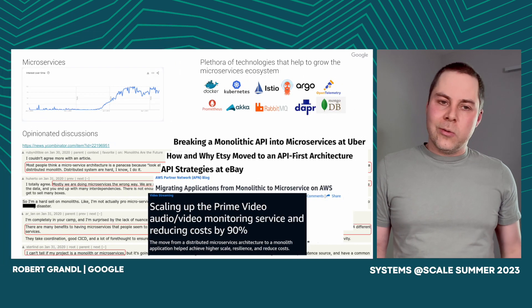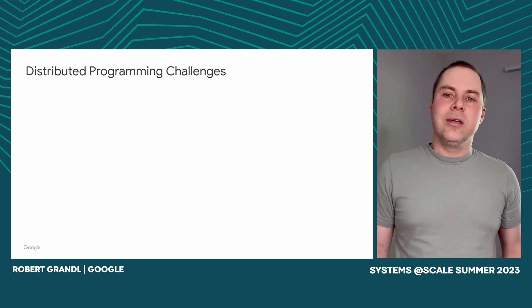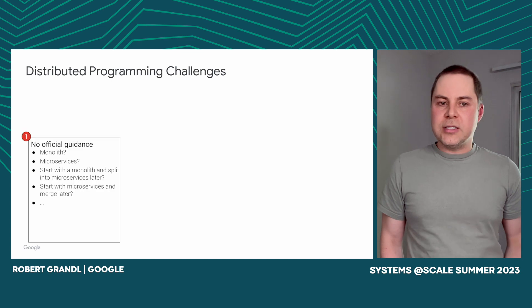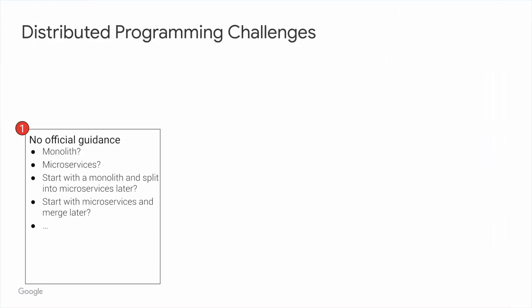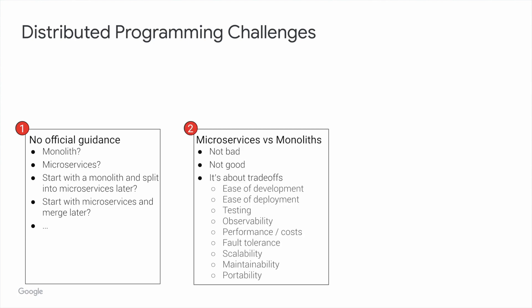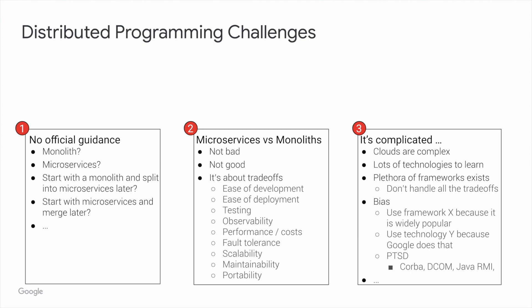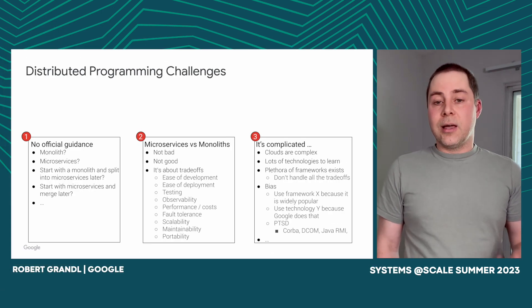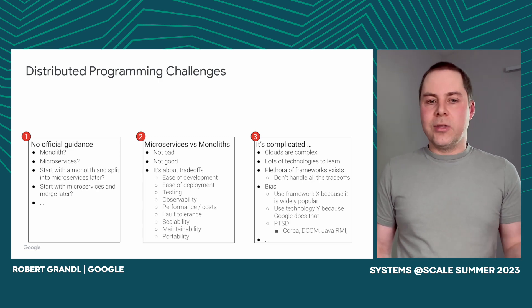Based on all these findings and our own experience, we identified three key challenges when writing distributed applications. First, there is no official guidance on how to write your application — should you write a monolith, a microservice-based architecture, or start with a monolith and then evolve to microservices? Second, people don't know which one is good or bad, and the truth is neither — it's all about trade-offs. If you care about simplicity, think about a monolith; if you care about scalability and fault tolerance, think about microservices.